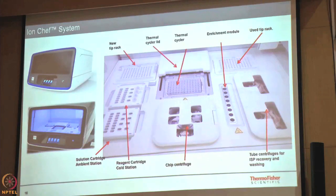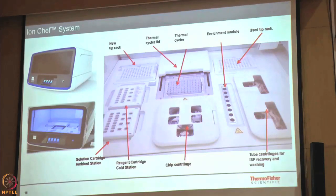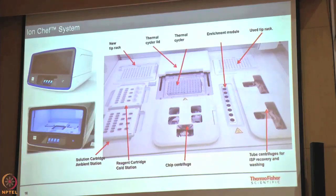When preparing libraries using the Ion Chef system, you load DNA samples and various cartridges into different sections of the system, and you get a final library pool in one of the tubes. For template preparation on Ion Chef, you again load cartridges and the system performs emulsification and amplification in a 96-well plate. Enrichment happens through a cartridge, then the centrifuge step loads chips automatically, and these chips are ready to go directly onto the sequencer.